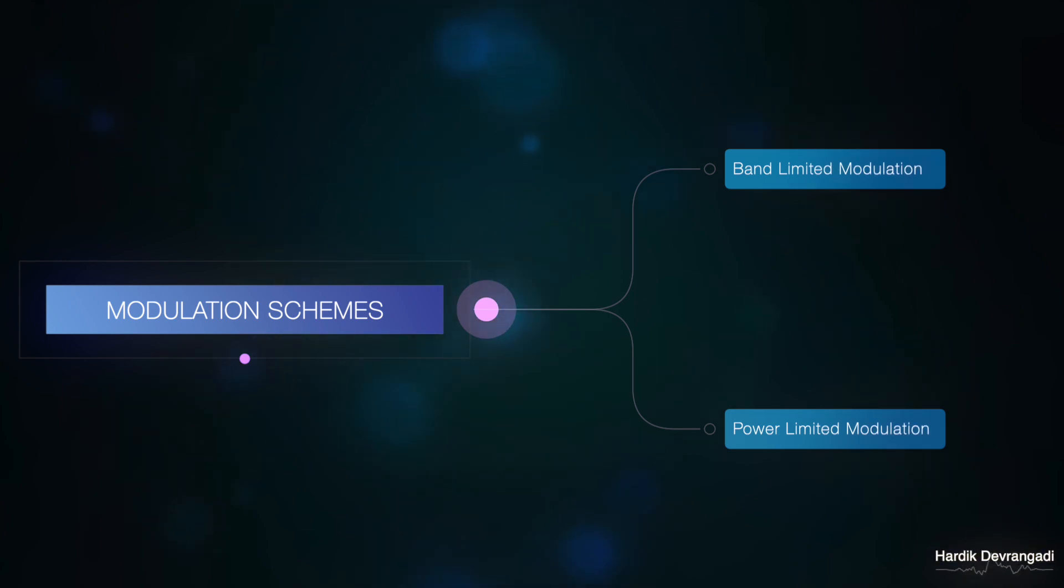Band limited modulation technique is used when the bandwidth available for transmission is limited. Normal cellular communication uses this technique as telecom operators are allotted narrow bandwidth channels to provide services. To compensate for this, power is increased to maintain quality of service.